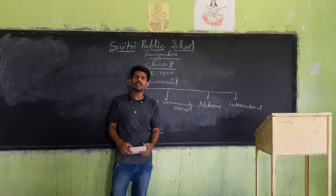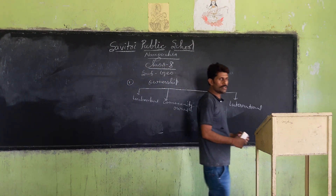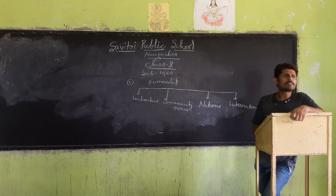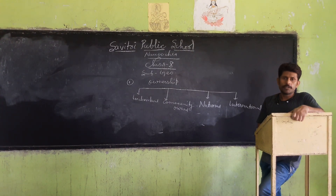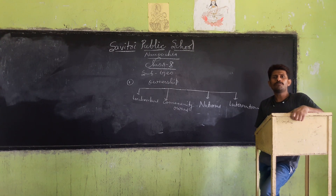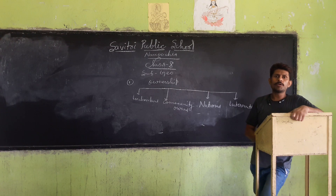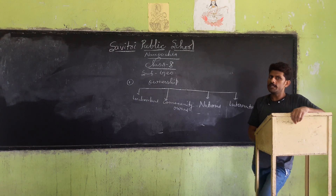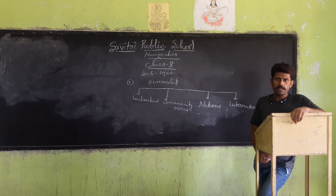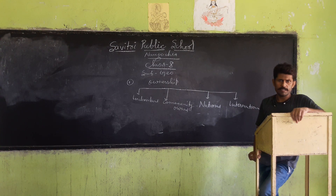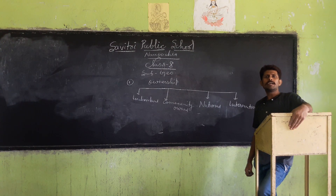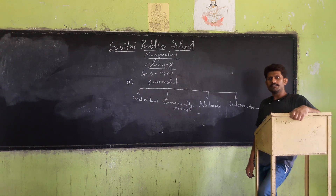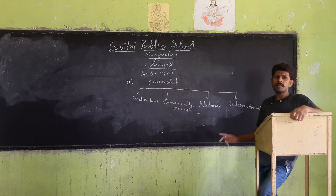Community-owned resources are those resources which can be used by all the members of a community. For example, if a grazing ground is present in a village, that grazing ground will be used by all members of that village. It means that grazing ground is the property of that village community.